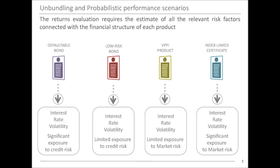To understand this first pillar, we take four financial products. These four products are definitely different — not only by name. We have a defaultable bond, a low-risk bond, a BPPI product (dynamic proportional portfolio insurance — a structured product where financial engineering rearranges the bond and equity components over time to keep the degree of risk more or less stable), and an index-linked certificate, which is a sort of standardized derivative.